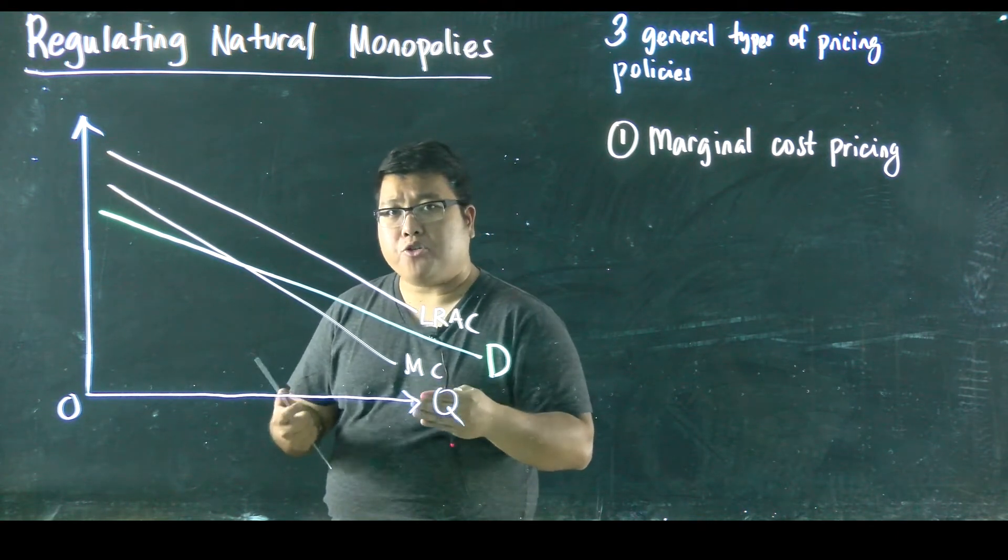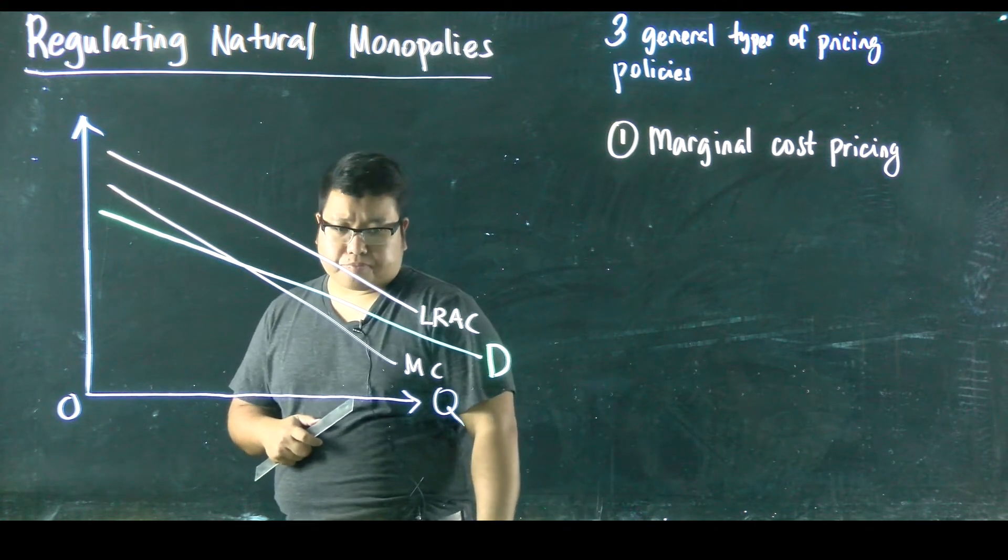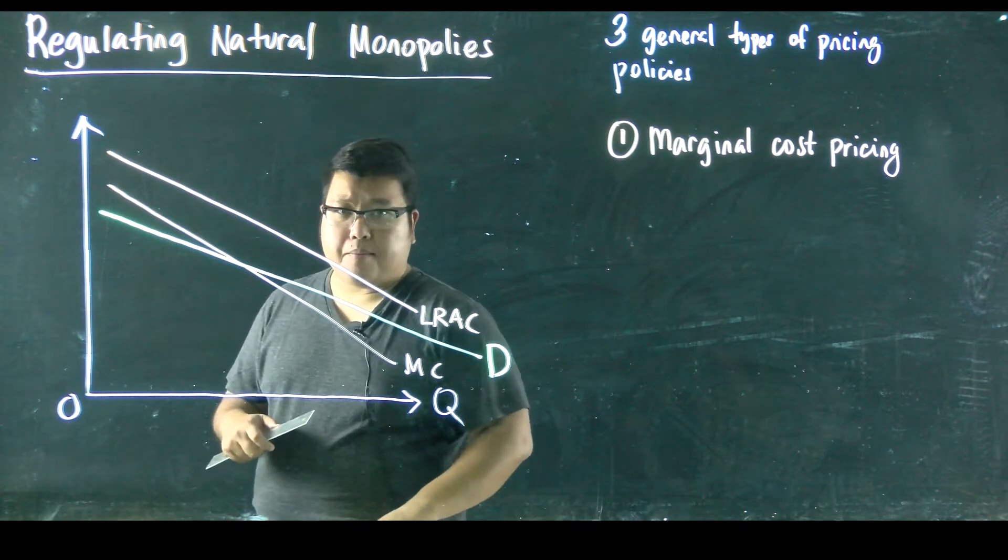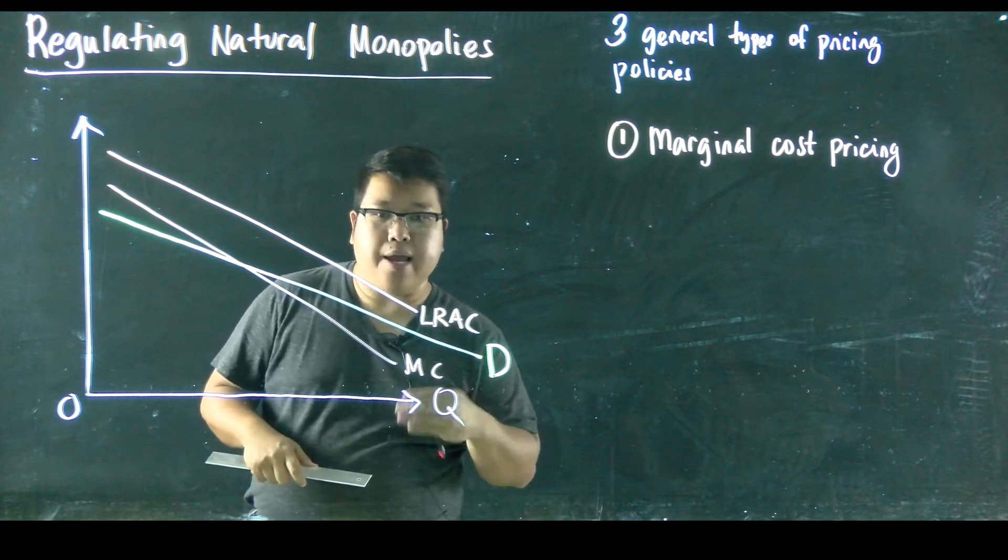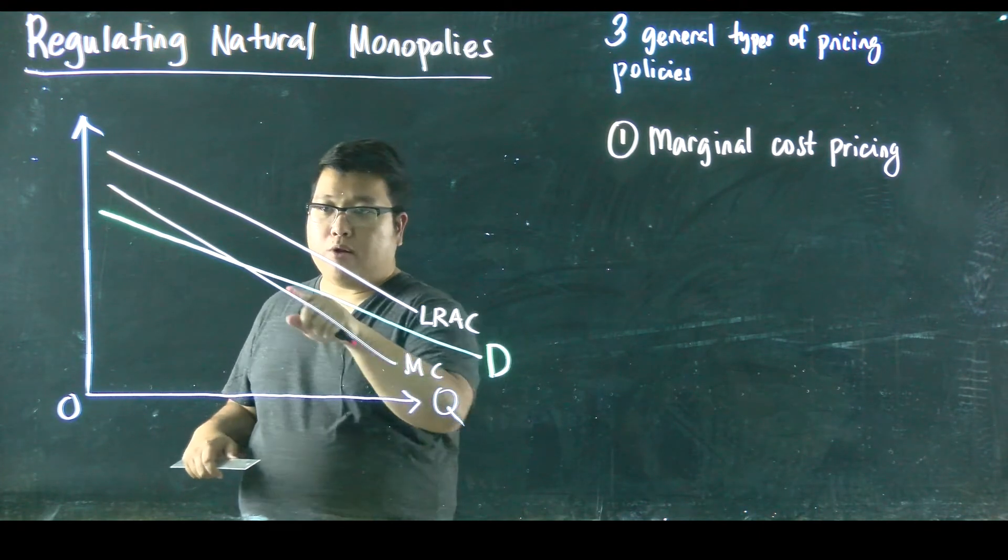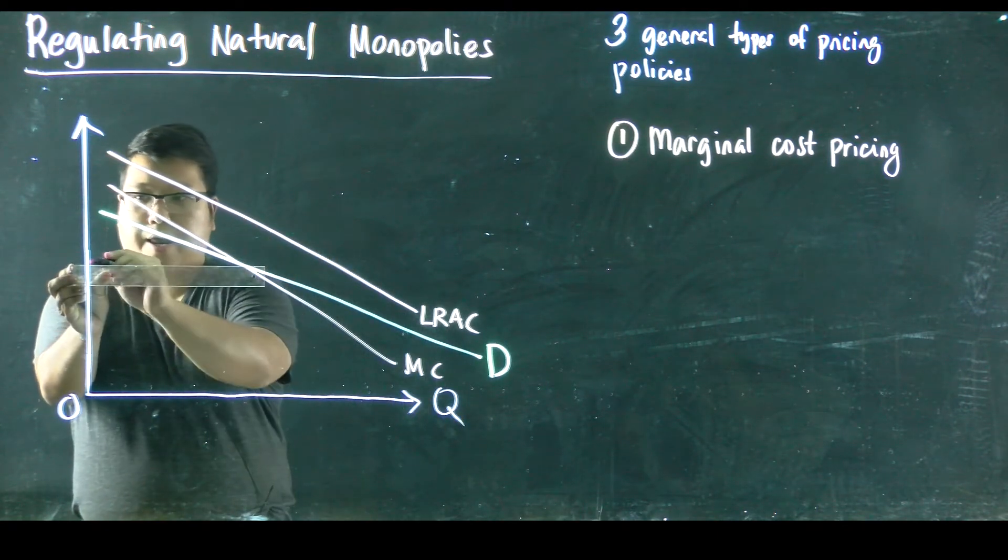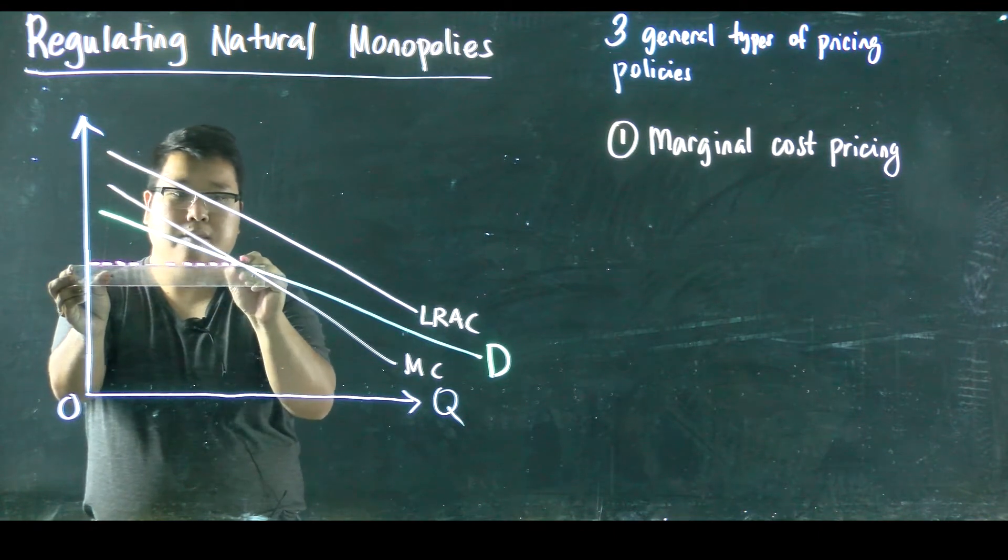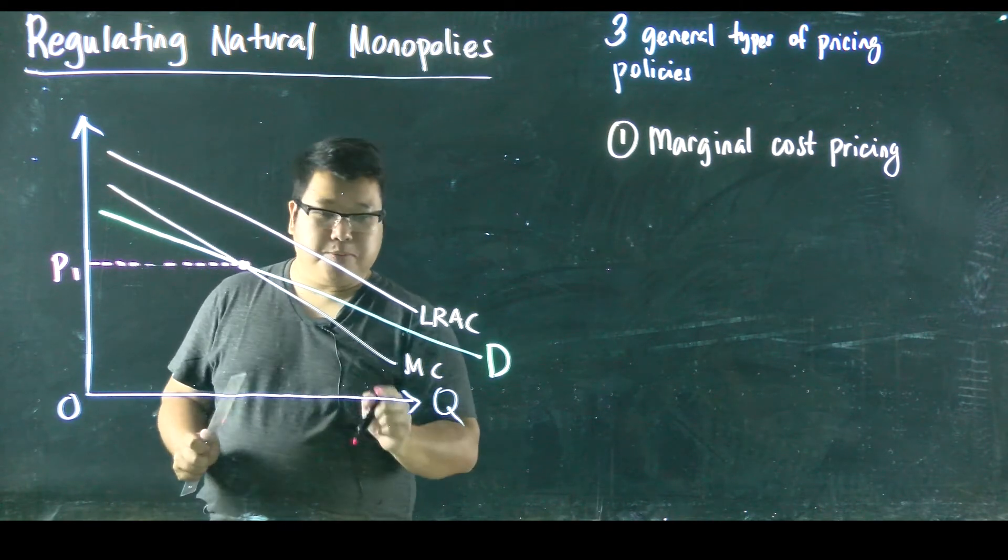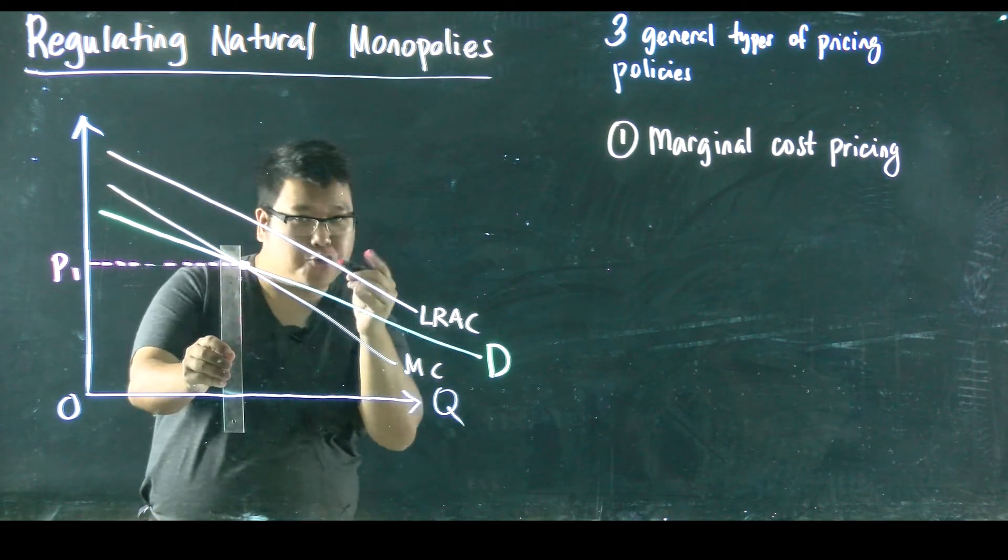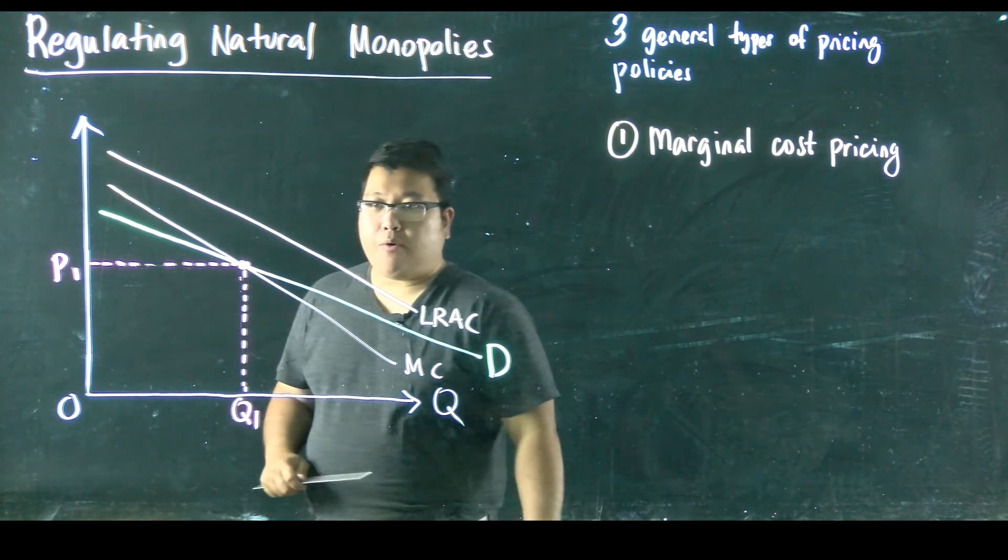Now, how do we regulate a natural monopoly by way of marginal cost pricing? So the idea is like this. The idea is that the government, for example, would step in and impose a regulation in such a way that price is equal to where MC intersects the demand curve for this good. So it's going to be here. And I will call this marginal cost price as P1. And at P1, this monopolist will, or this natural monopoly, will produce an amount Q1.